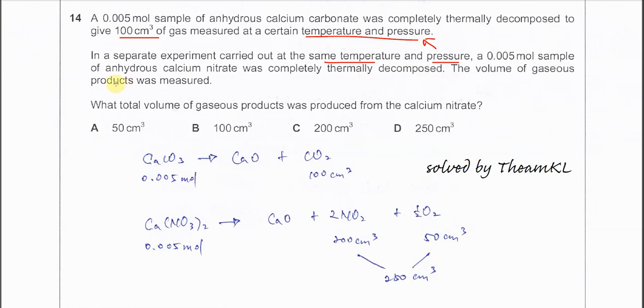For this question you must follow the comparison. Calcium carbonate 0.005 mol will produce 100 cm³. Please do not use the molar volume, because molar volume is for room temperature and pressure.